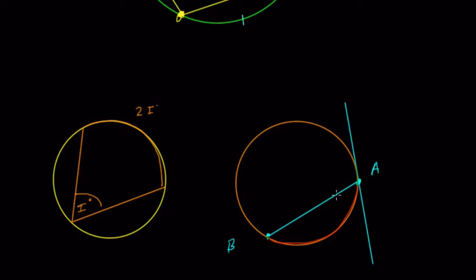We'll have this angle here, let's call it angle T. Angle T is also half the measure of the arc that it intercepts. So the measurement of angle T equals one half the measure of arc AB.